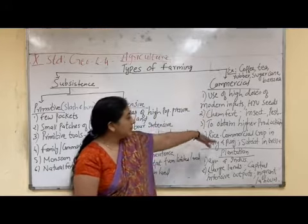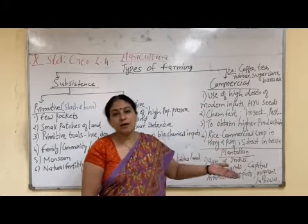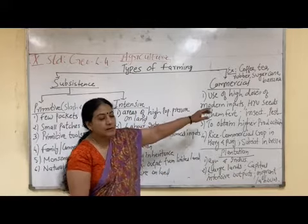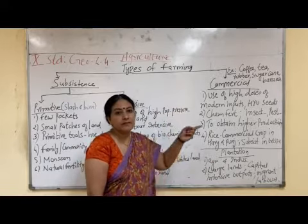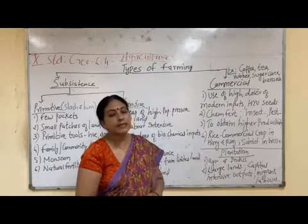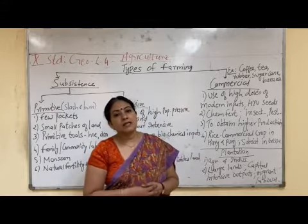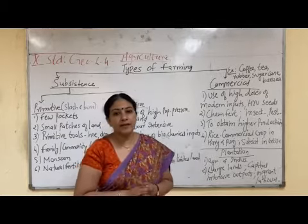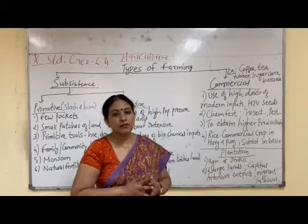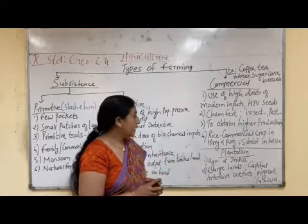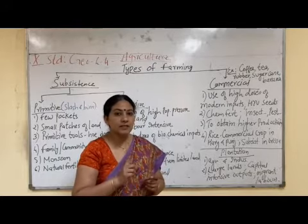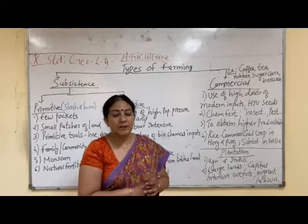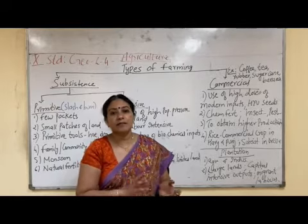One type of commercial farming is plantation agriculture. Just as subsistence farming has two types — primitive and intensive — commercial farming's key type is plantation agriculture. In plantation agriculture, a single crop is grown in a large piece of land. One feature is the single crop in a large area. The second feature is that plantation agriculture has agriculture and industry hand in hand.